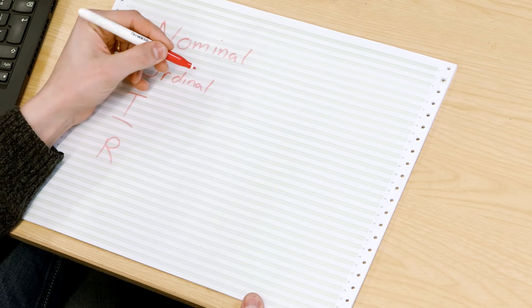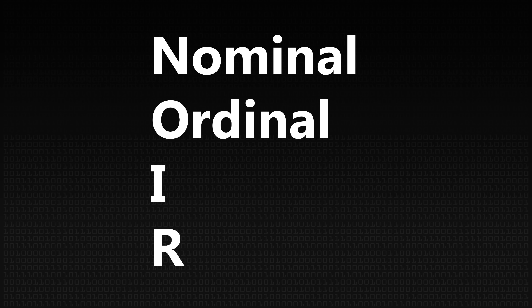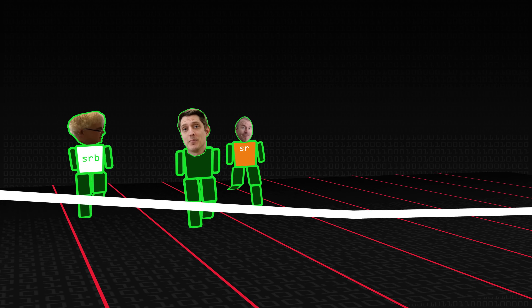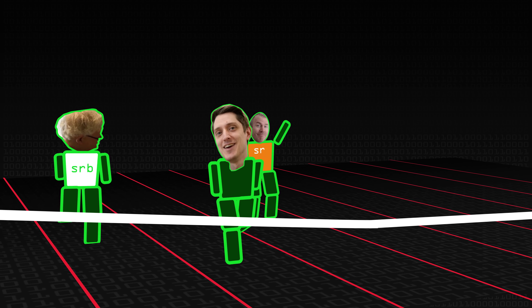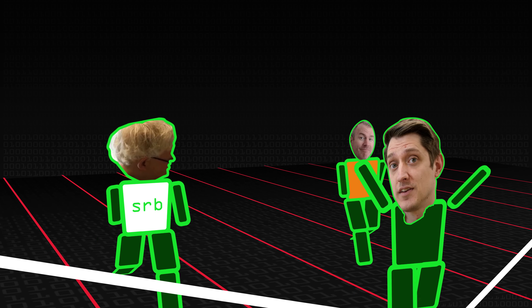The next type is ordinal. In ordinal data, we have an order, but we can't measure distances between things. A good example would be finishing positions in a race — maybe I finished first and you finished third, but how far apart we are isn't included in that data. Another example we're all familiar with is rating systems: you rate a film from one to five stars, but you can't really say a film that scored four stars is two times better than one that scored two, because that's very subjective. If you have ordinal data, you can calculate the mode or the median — the value that sits in the middle. So it's still not hugely useful in terms of statistical power.